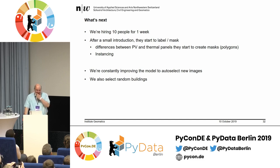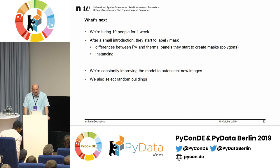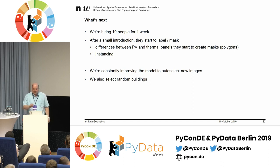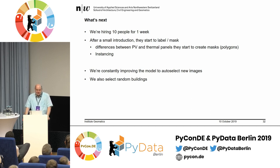What we're trying to do is hire ten people for one week, give them one day of introduction, and then let them label. That's the best solution we came up with. After the tutorial on what is what, they draw polygons for one week. But the real problem is we have 2 million buildings — which buildings actually have solar panels? With the current model, maybe we can find a solar panel and then use that image to draw the real polygons around it. We still have to also select random buildings.